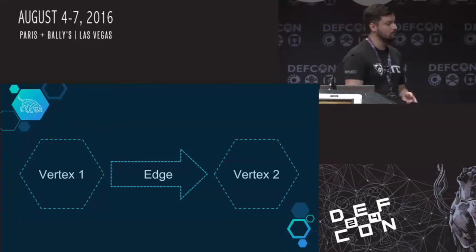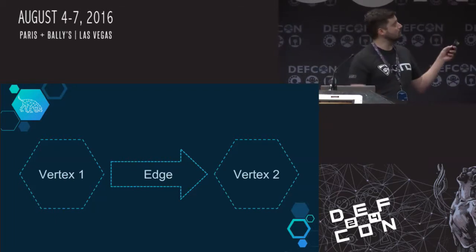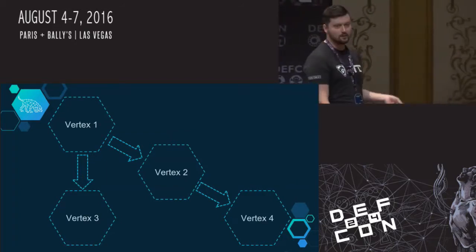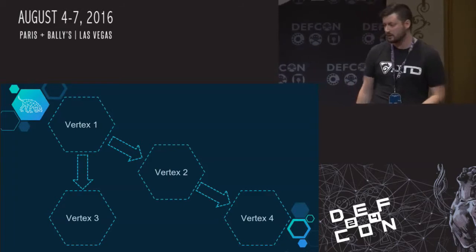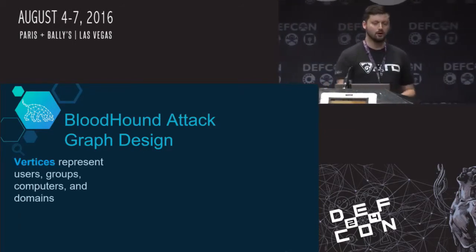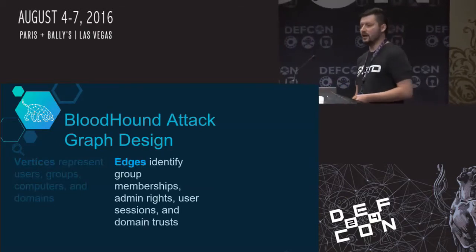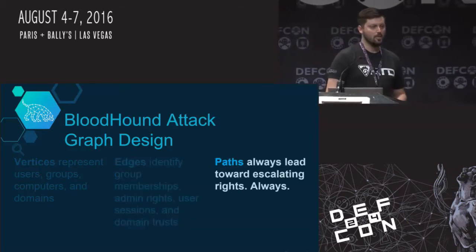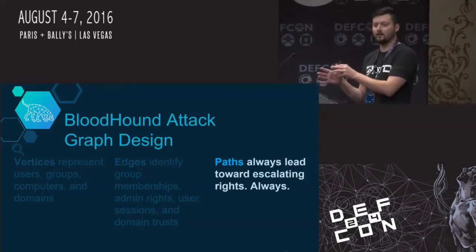Here's a visual example: a simple graph with two vertices and a directed edge — a one-way street. You can go from vertex 1 to vertex 2 but not the other way. Can you see a path from vertex 1 to vertex 4? Yes. Is there a path from vertex 3 to vertex 4? No, because you'd have to go the wrong way against a directed edge. After many false starts, we landed on an attack graph design where vertices represent users, groups, computers, and domains; edges identify admin rights, group membership, user sessions, and domain trusts; and paths always lead towards escalating privileges.